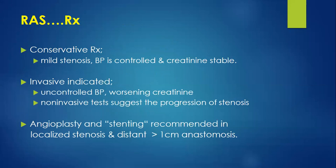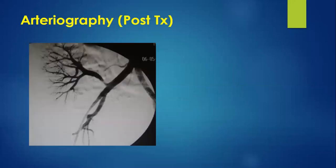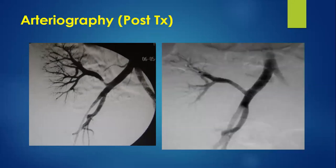Treatment: conservative if stenosis is mild and BP is controlled with stable creatinine. Invasive treatment is considered for uncontrollable hypertension on multiple antihypertensive regimes, worsening creatinine, or non-invasive tests suggesting progression of stenosis. Angioplasty and stenting are recommended for localized stenosis at a distance of more than 1 cm from the anastomosis. Angiographic images show narrowing of the lumen, then the lumen after stenting with the stenotic segment resolved.